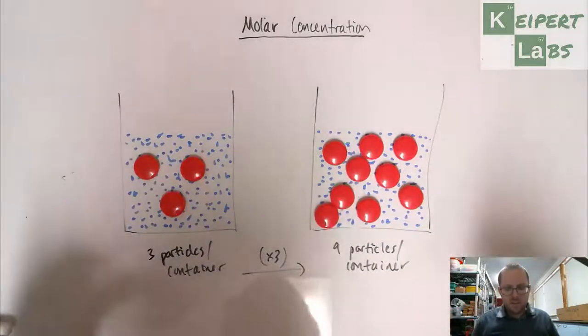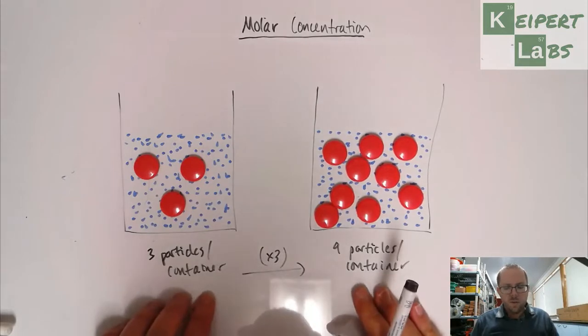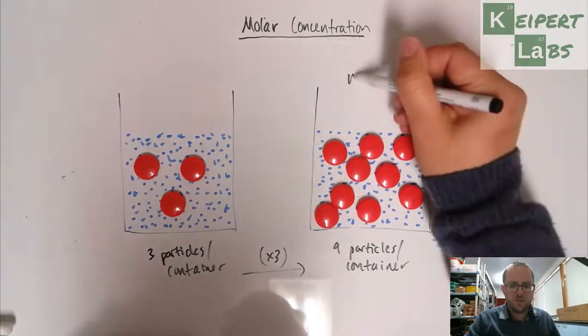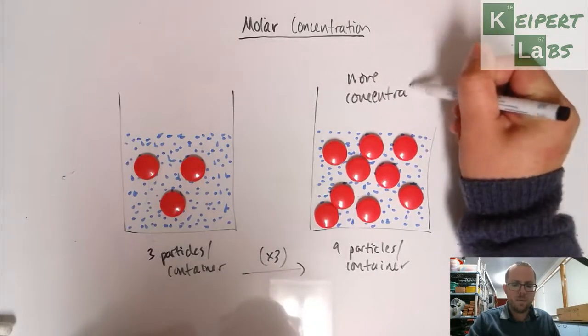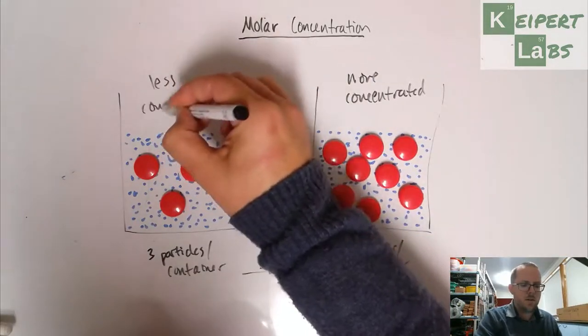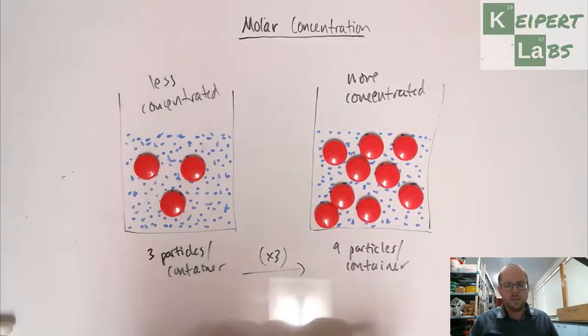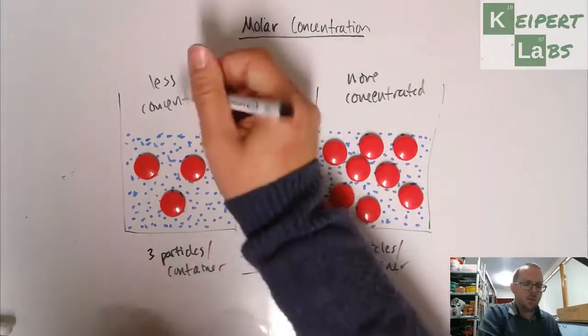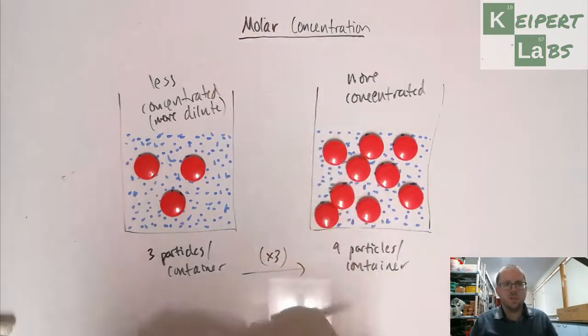But now the problem is that this is too general, because we are expressing a difference here, and we could say this is more concentrated. So thinking about perhaps like if you're making up cordial, depending on how much syrup you add to how much water that you have, you get something that's more concentrated, or less concentrated, or we might say more dilute, is the opposite of concentrated.